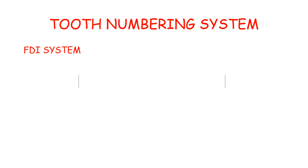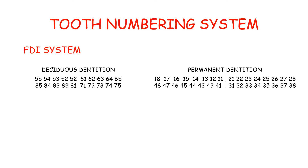The FDI two-digit system has been adopted by the World Health Organization and accepted by other organizations too. In this system, the first digit indicates the quadrant: 1 to 4 for the permanent dentition and 5 to 8 for the primary dentition. For example, the permanent upper right central incisor is designated 1-1.